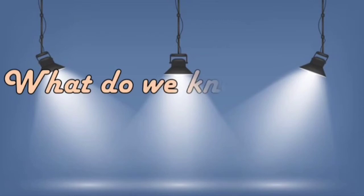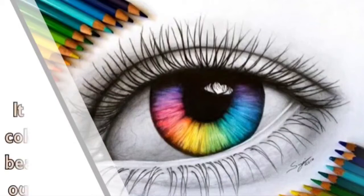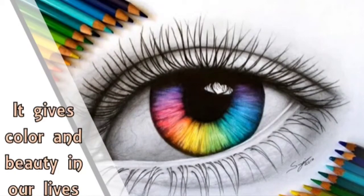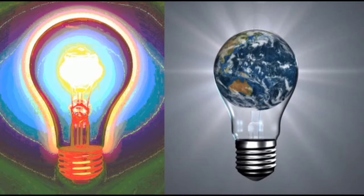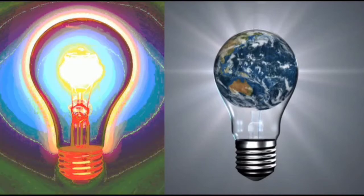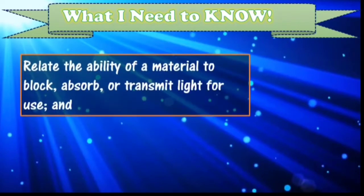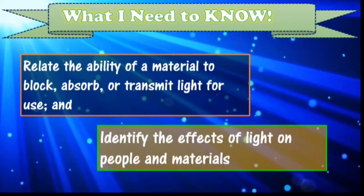But my question now is, what do we know about light? We know that light is something that we can see. It gives color and beauty in our lives. Learning about the behavior or properties of light is not only fun, but our knowledge about light can also help us create many things that will benefit society. In this lesson, we will explore how light behaves and observe its effects on objects. At the end of this lesson, you are going to relate the ability of a material to block, absorb, or transmit light, and identify the effects of light on people and materials.